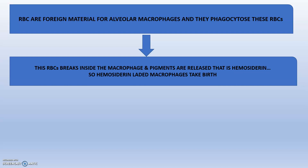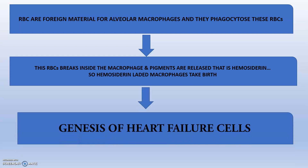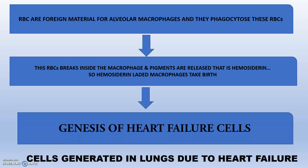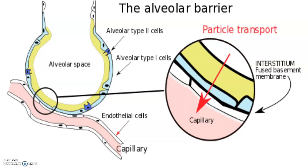Inside the macrophages, the RBCs break and their pigments are released — specifically, hemosiderin accumulates inside the macrophages. These hemosiderin-laden macrophages are otherwise called heart failure cells — cells produced inside the lungs due to the failure of the heart. This is the genesis of heart failure cells: cells generated in the lungs due to heart failure.